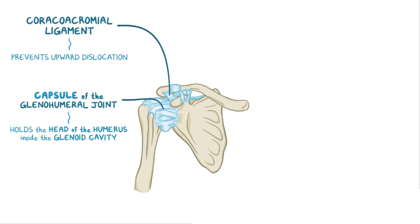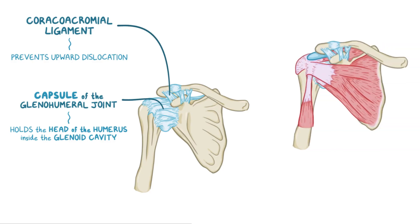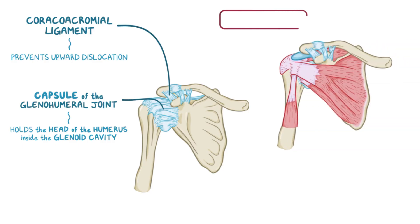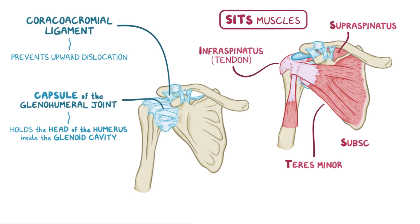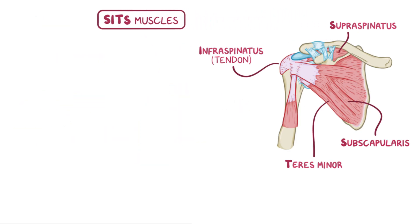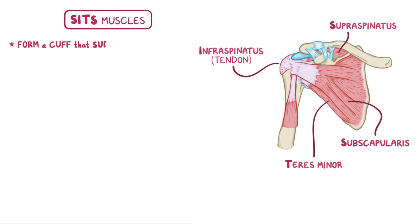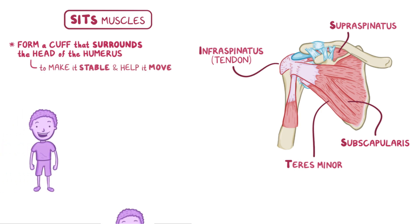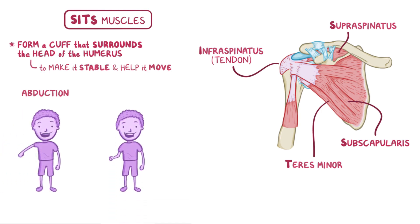In addition to these ligaments, the shoulder is supported by the four rotator cuff muscles, also called the SITS muscles, for supraspinatus, infraspinatus, teres minor, and subscapularis. The SITS muscles form a cuff that surrounds the head of the humerus to make it stable and help it move, specifically in abduction as well as internal and external rotation.